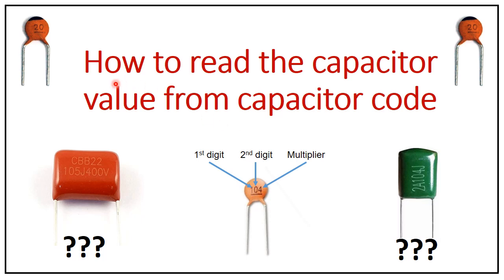In this session we will discuss how to read the capacitor value from capacitor code. Here we have shown the capacitors — these two are the film capacitors and this is the ceramic disk capacitor.